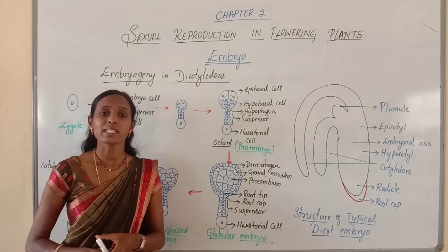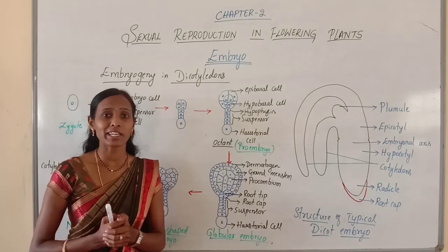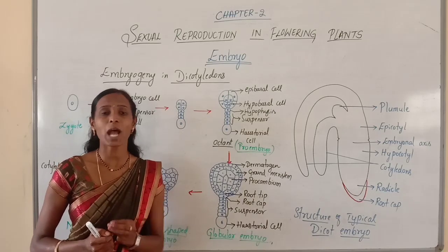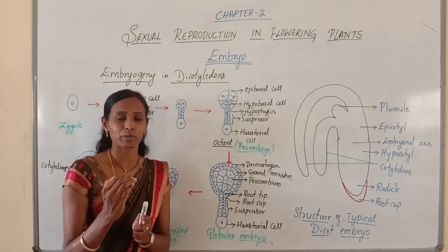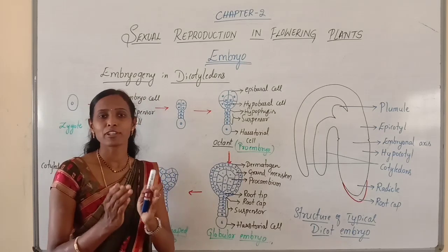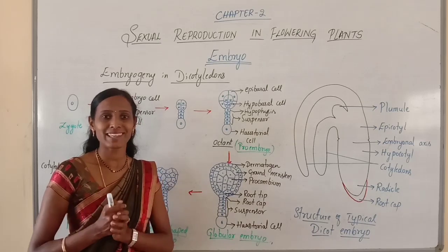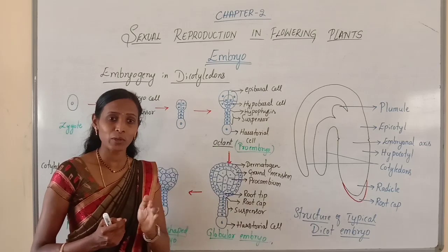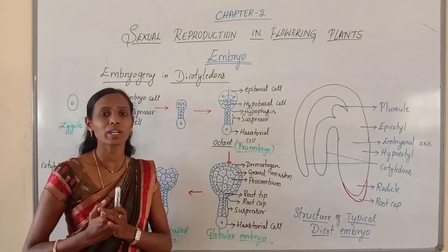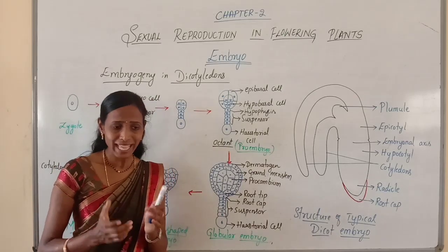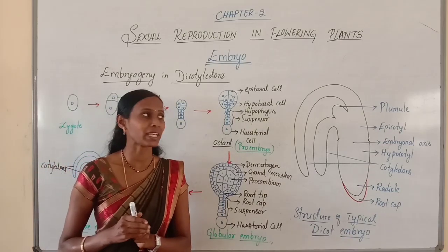Endosperm is the nutritive tissue which helps in nourishing the developing embryo. As the embryo requires nourishment, only after the formation of a certain amount of endosperm will this zygote start to divide to form the embryo. This is very important. Only after the formation of endosperm, the zygote will divide to form the embryo. This can be considered an adaptation, as the embryo requires nourishment from the endosperm.